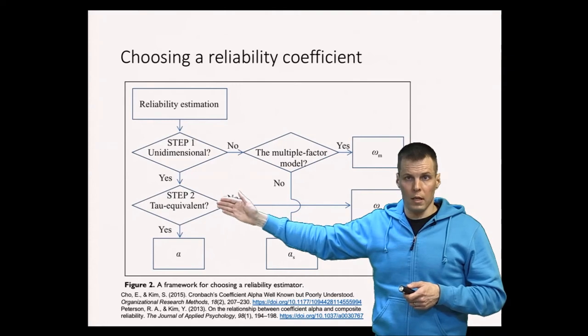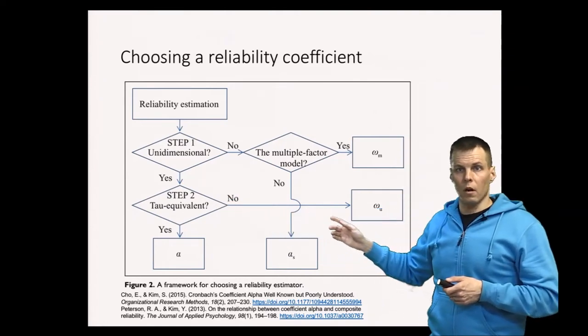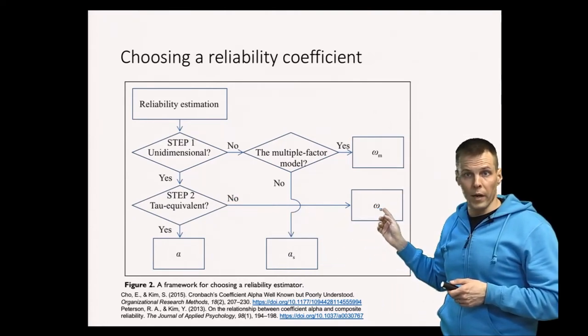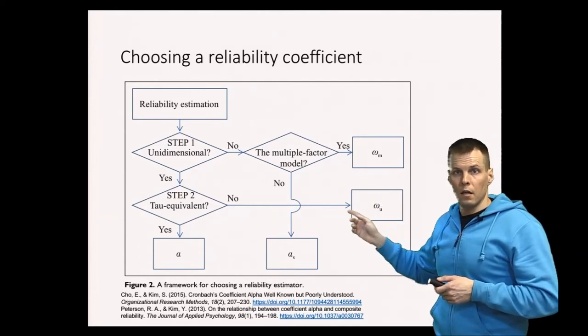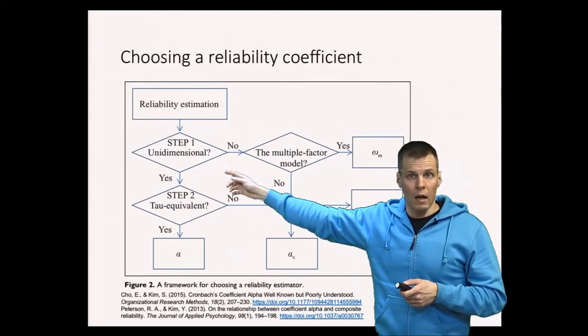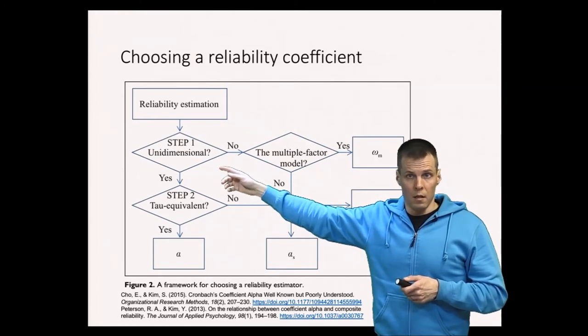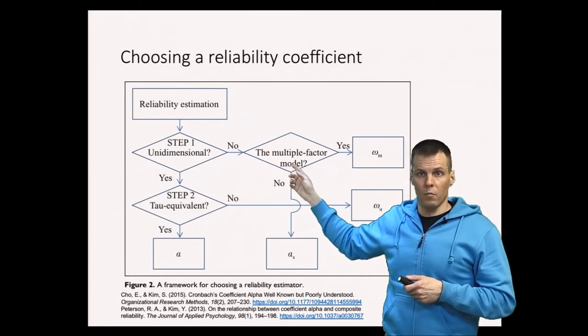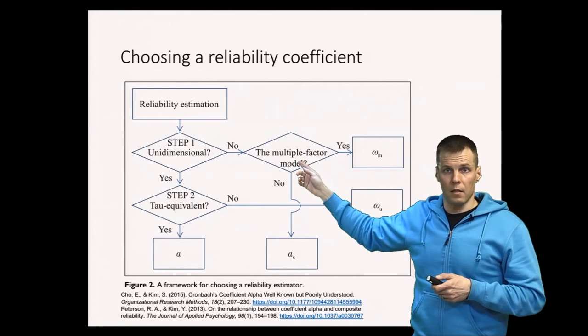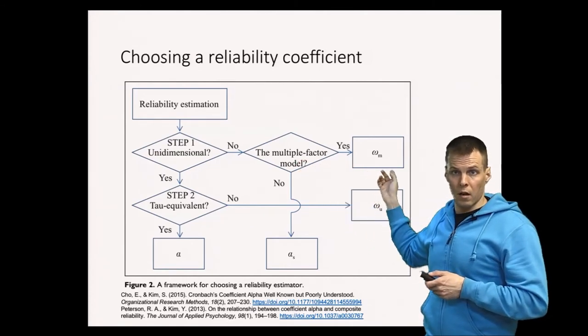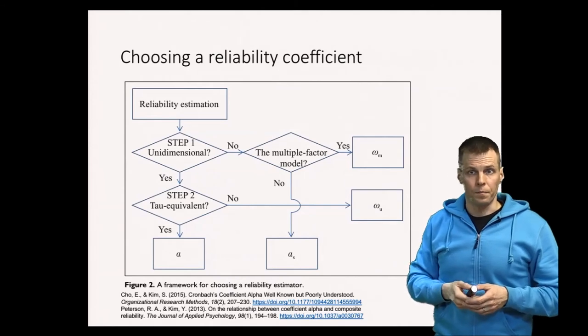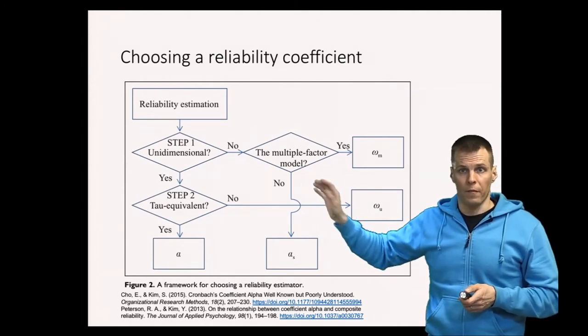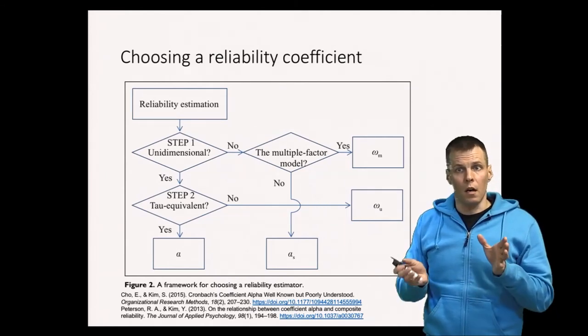If no to the second step then you go with coefficient omega or composite reliability index. If on the other hand you don't have unidimensionality then you apply a factor model in which case you do a hierarchical omega or a variant of alpha that doesn't use the factor model.